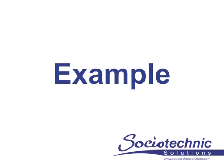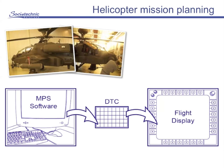Here we'll be taking an example and describing how cognitive work analysis can be applied to a real-world setting and some of the benefits it has. The example we'll be using is that of helicopter mission planning — specifically planning missions for attack helicopters. This planning involves determining where the helicopter needs to go, via what route, and also what kind of munitions and what payload is required for the aircraft to complete its mission.